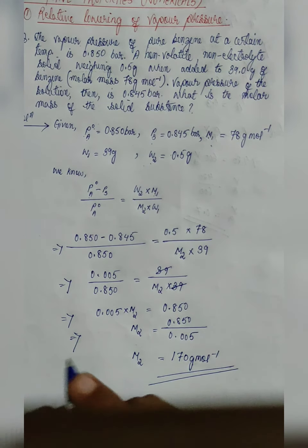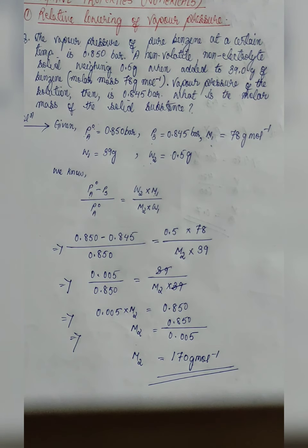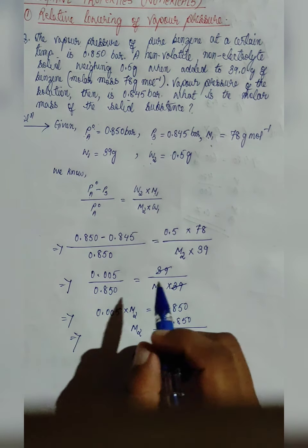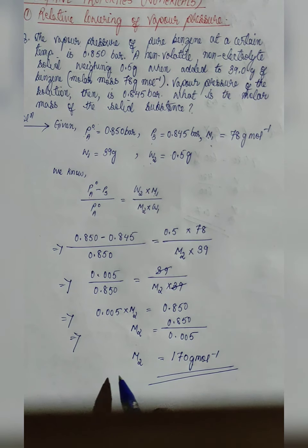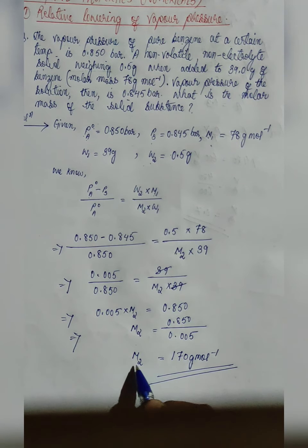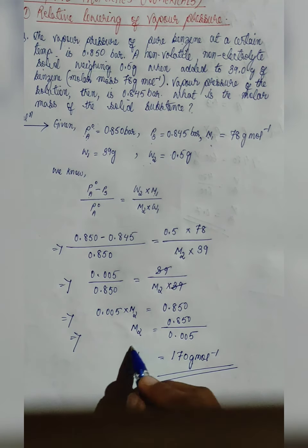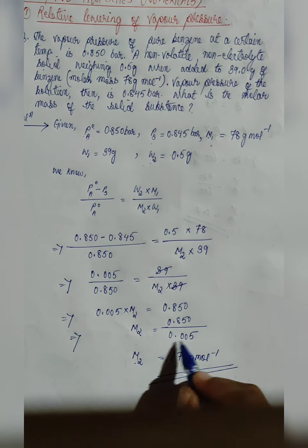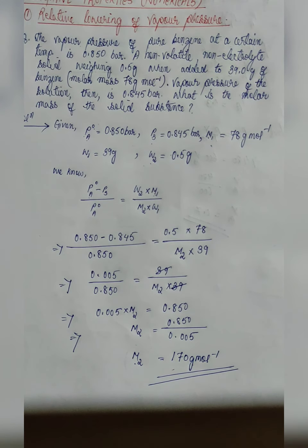Gram per mole is the unit of molecular mass. The question asked us to find the molecular mass of the solid substance, which we indicated as 2. Finally, we found out the molar mass of the solid substance is 170 gram per mole. Our task is done.